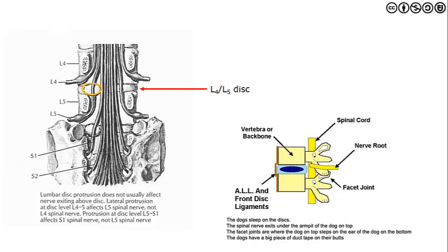A helpful mnemonic is the 'Scotty dog': the dog sleeps on top of the disc, and the spinal nerve exits under the armpit of the dog on top. The facet joints are where the dog on top steps on the ear of the dog on the bottom. A big piece of duct tape on the hindquarters holding them together represents the anterior longitudinal ligament. With that, we conclude our functional overview of the spine from cervical to lumbar.